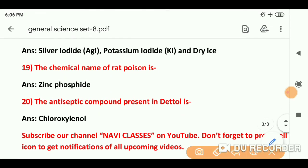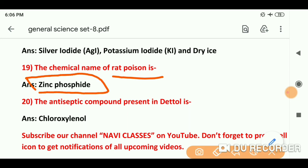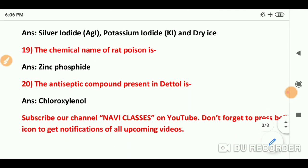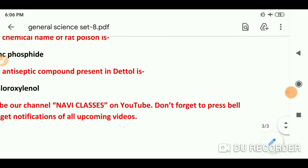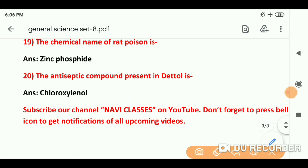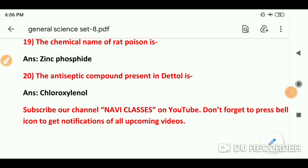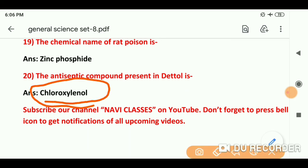Question number 19: The chemical name of rat poison — जो rat poison होता है उसका chemical name है zinc phosphide. Question number 20 (last question): The antiseptic compound present in Dettol is — Dettol में जो antiseptic compound present होता है, लगभग 4% — वो है chloroxylenol.